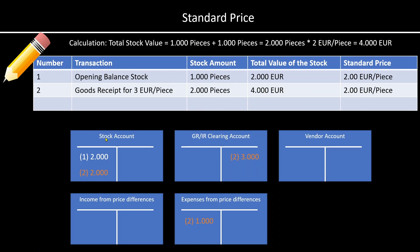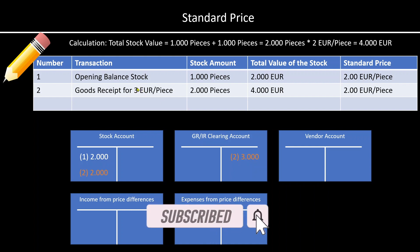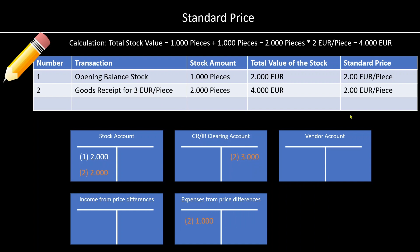As for the accounting entries, our stock account, which was valuated at 2,000 euro before, now increased by another 2,000, so in total we have 4,000. Then we have the GRIR clearing account — this 3,000 is nothing else than the quantity we received (1,000 pieces) times the actual price of 3 euro per piece, so 3 times 1,000 is 3,000. In the GRIR clearing account we will have the real value. The difference between our standard valuation and the actual value from the goods received — 3,000 minus 2,000 equals 1,000 — is accounted as an expense for price differences, as the price actually increased in comparison to what we initially stated in the purchase order.